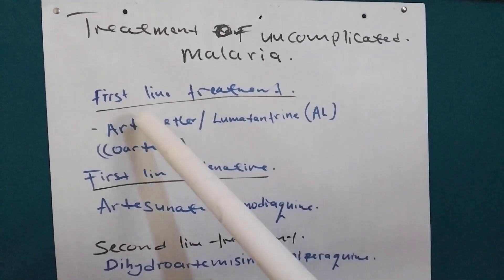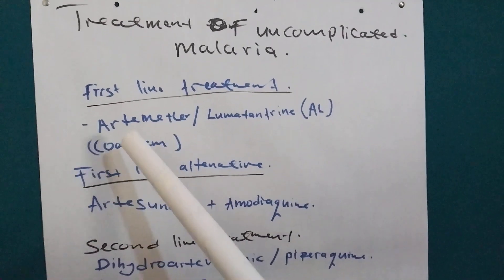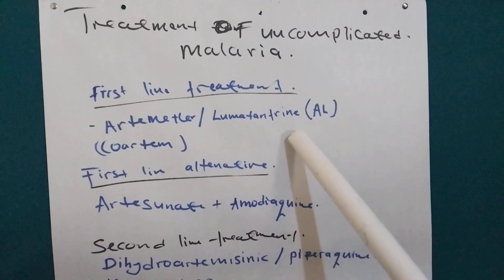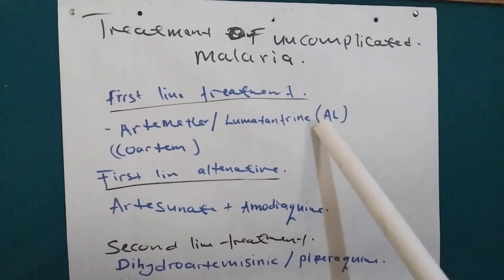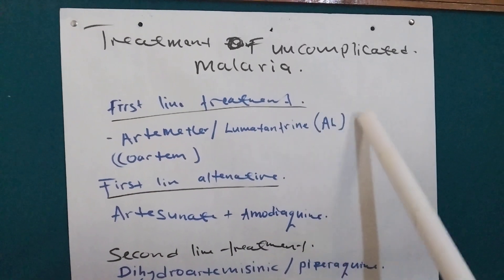So the first line treatment of uncomplicated malaria is Artemether and Lumafantrine and sometimes we call it Coartem, C-O-A-R-T-E-M, Artemether and Lumafantrine. This is the short form.